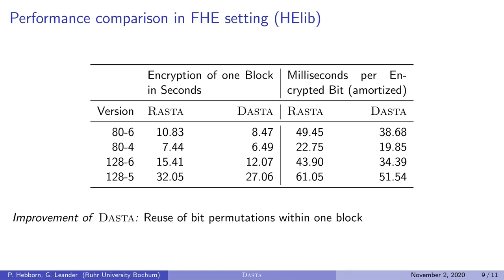RASTA needs uniformly drawn affine layers for the security arguments. But for DASTA, the security arguments are different. And this allows us to reuse some bit permutations within the generation of one keystream block. And this reuse leads to some performance improvement in the FHE evaluation, while for RASTA, every affine layer is different because it's generated pseudorandomly. And this advantage of reusing affine layers leads to 15% to 20% faster encryption in the HElib for DASTA.